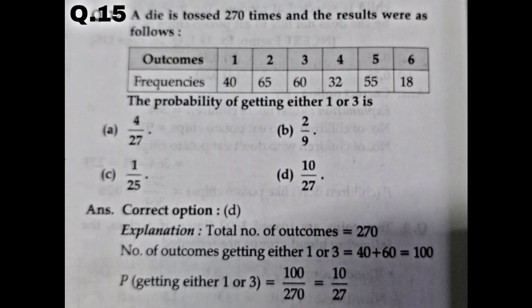Moving to question number 15. A die is tossed 270 times and the results are: 1 appeared 40 times, 2 appeared 65 times, 3 appeared 60 times, 4 appeared 32 times, 5 appeared 55 times, and 6 appeared 18 times. What is the probability of getting either 1 or 3? Favorable events: 1 appeared 40 times, 3 appeared 60 times, so 40 + 60 = 100. Total outcomes = 270. Probability = 100/270 = 10/27, which is option D.